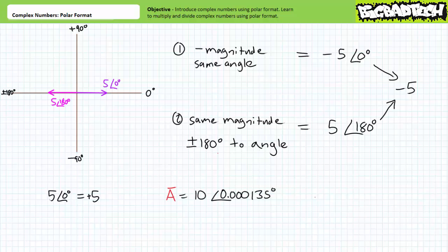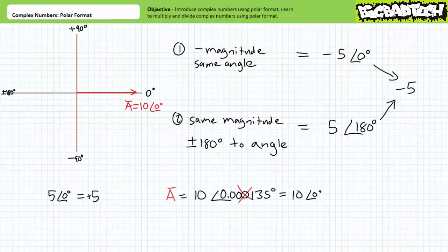Here's another oddity you may run across. Consider a complex number expressed in polar format with a magnitude of 10 at an angle of 0.000135 degrees — or 135 micro-degrees. At such an astronomically small angle, we can treat it like your lab partner's personal hygiene: neglect it, and just express our value as 10 at an angle of roughly 0 degrees. Don't lose yourself in the complexities of complex numbers — don't forget how to round values.